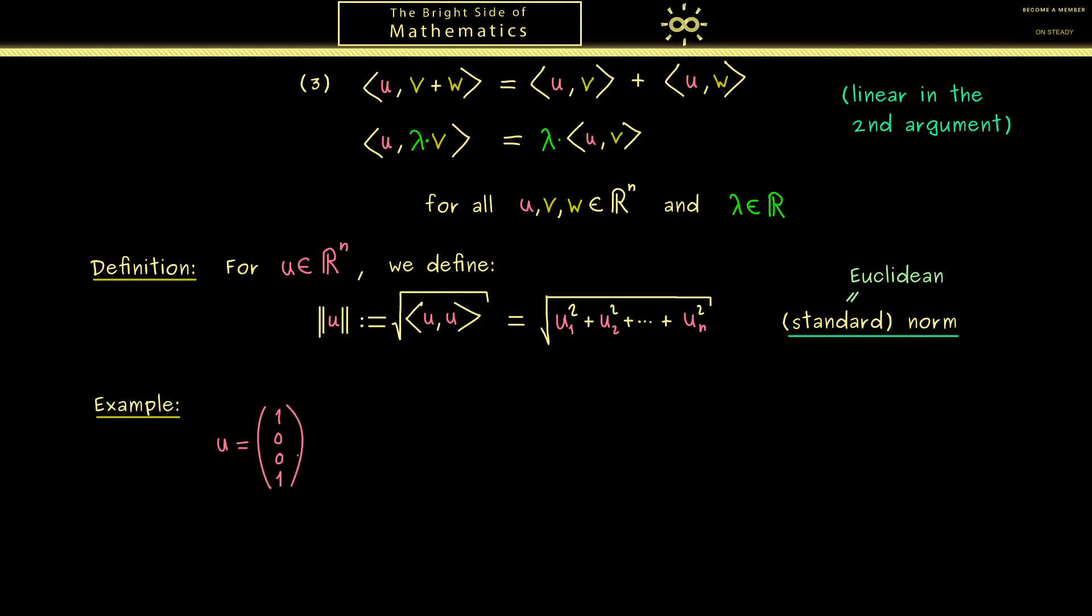For example we could look at vectors in R^4. Here u should be the vector (1,0,0,1). And v can be the vector (0,2,0,0). Now the first thing you should note here is that the inner product of u with v is clearly 0. So we say in R^4 these two vectors are orthogonal. Therefore if we would visualize them we could do it with a right angle.